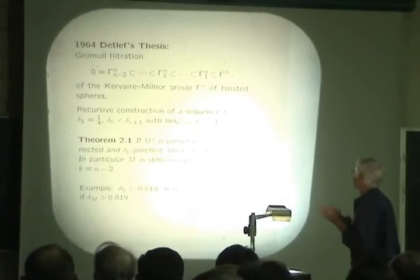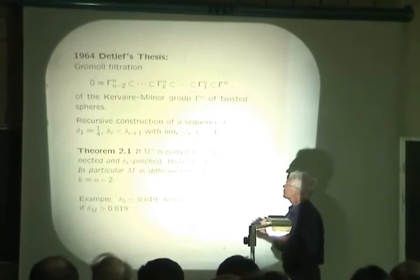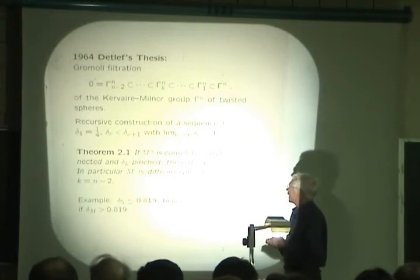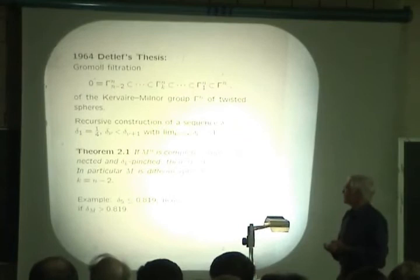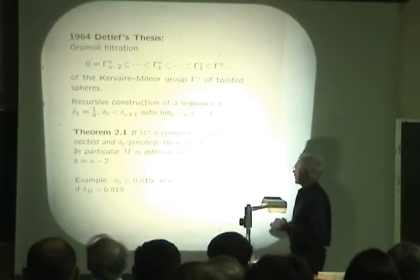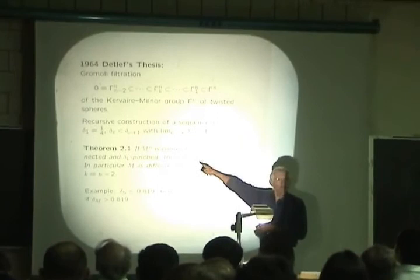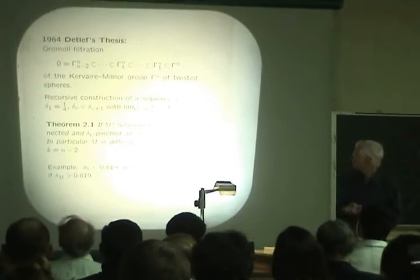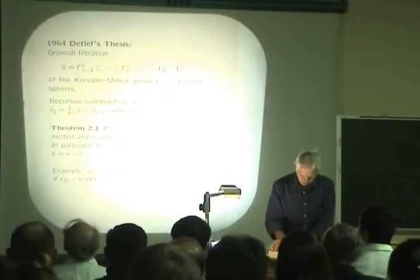Okay, so here was the wonderful theorem that he proved in his thesis. There's a sequence of constants beginning with a quarter and going to one as n goes to infinity, increasing. He proved that if you have a simply connected manifold which admits a δ_K-pinched metric, then that manifold was the sphere whose exoticness is controlled by K. In other words, it lies in the K level of the Gromoll filtration. This is a really beautiful result.